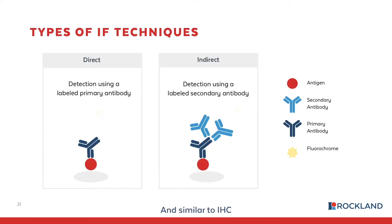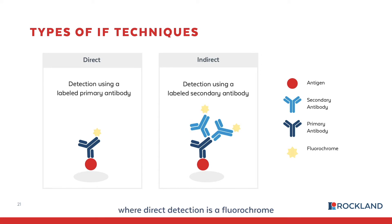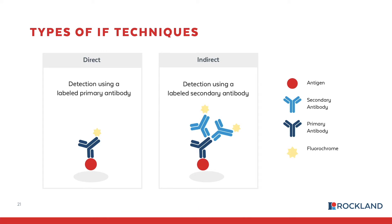Similar to IHC, there are two main methods of detection: direct and indirect, where direct detection involves a fluorochrome conjugated to a primary antibody, and indirect uses a fluorochrome conjugated to a secondary antibody.